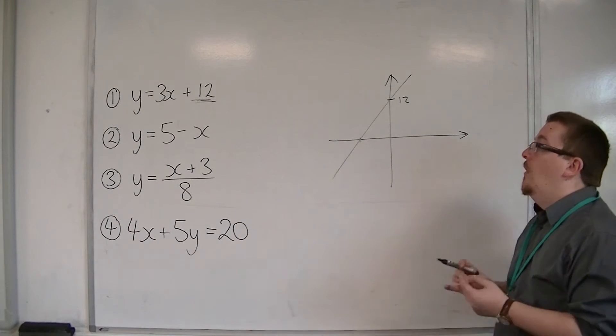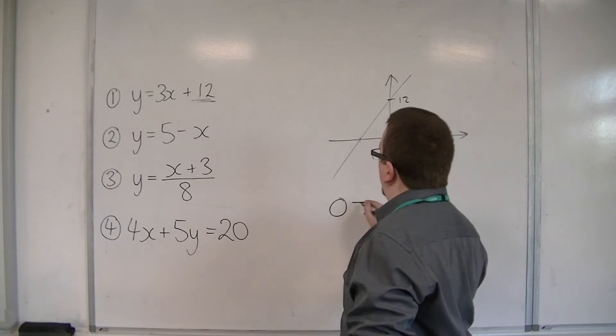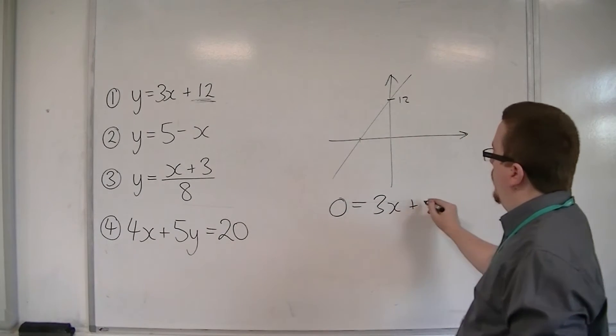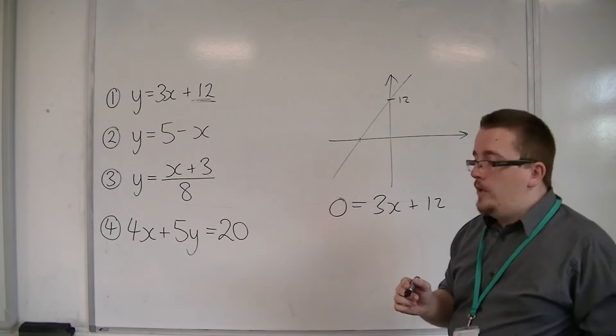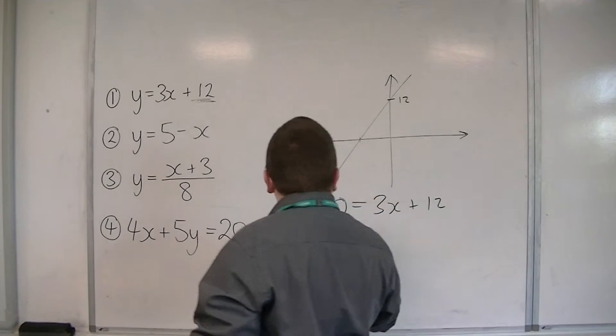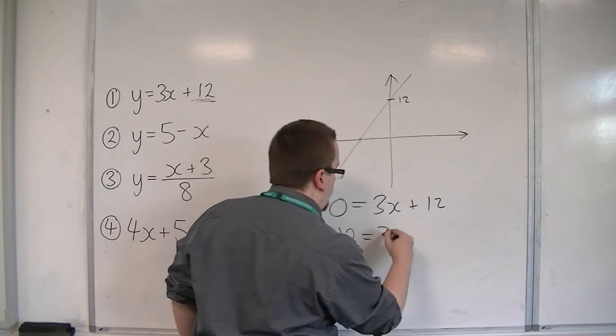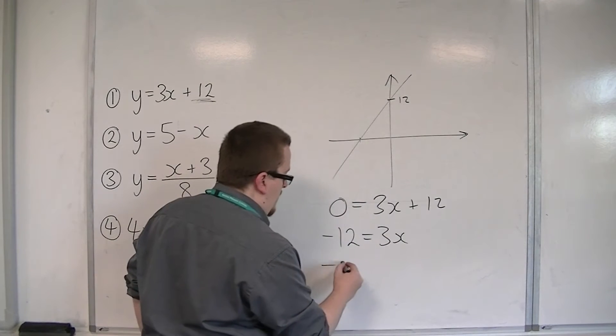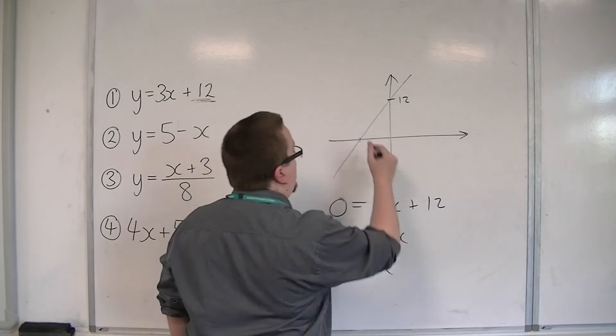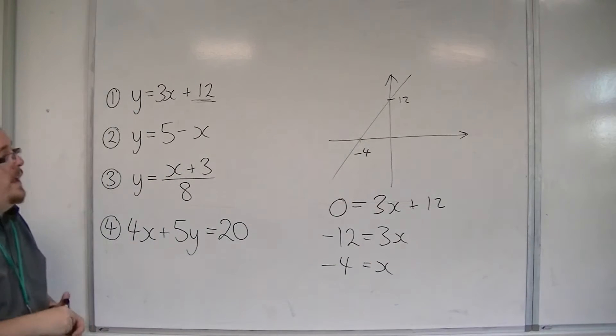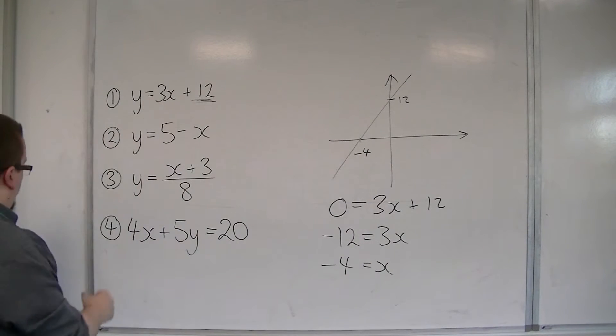Now that's when y is equal to 0. So if we put 0 is equal to 3x plus 12, and we solve that equation, we take 12 from both sides and divide both sides by 3. So that means that point is minus 4. And that would be a sketch of the first one, y is equal to 3x plus 12.